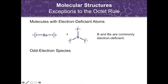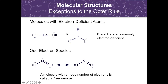The second exception is odd electron species. A few molecules contain a central atom with an odd number of valence electrons, so they cannot have all their electrons in pairs. Most of these molecules have a central atom from an odd-numbered group such as nitrogen. They are called free radicals — species that contain a lone or unpaired electron, making them paramagnetic and extremely reactive.